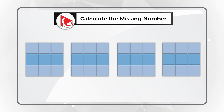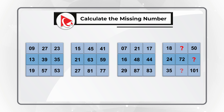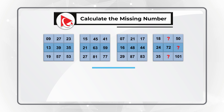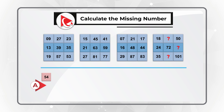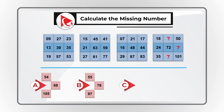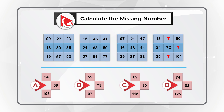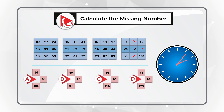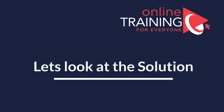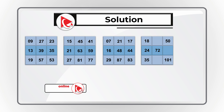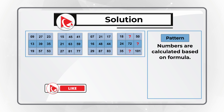Here is an amazing question to test your analytical skills. You're presented with four sets of 3-by-3 matrices, each with nine numbers. In matrix four, there are three missing numbers. Choices are: A — 54, 68, and 105; B — 55, 78, and 97; C — 69, 80, and 115; D — 74, 88, and 125. Give yourself 20 to 30 seconds to find the solution. The pattern is that numbers are calculated based on a formula using columns A, B, and C.